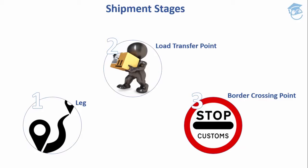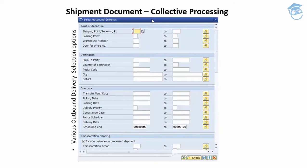The last shipment stage is border crossing points, which represent when goods cross national boundaries. Shipment stages can be used in various ways — for example, we could assign a border crossing point to a particular customer, knowing that whenever a delivery is made to that customer there will be a border crossing. We can also associate a border crossing point with a shipment cost, such as a duty or tax of a certain percentage, enriching our transportation planning process.